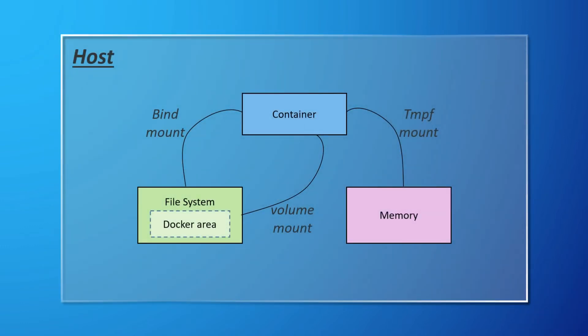Here's a diagram that illustrates how each of these storage approaches relate to the host. We have a bind mount, a volume, and a tmpfs mount. The bind mount connects a container to a directory on the file system of the Docker host. Next, we have a volume that connects the container to a directory in a specific area of the host machine. Note that this Docker area is surrounded by a dashed box, to signal that it's only accessible by the Docker engine and its processes. And finally, we have a tmpfs mount that connects the memory of the host machine to the container.